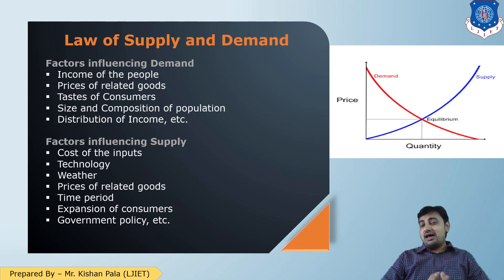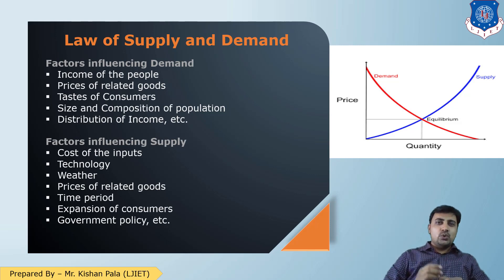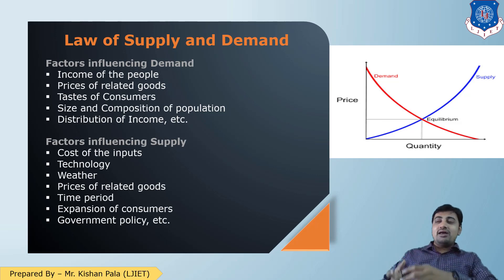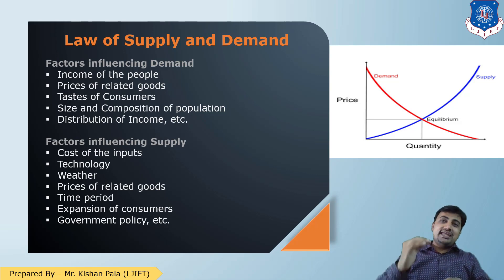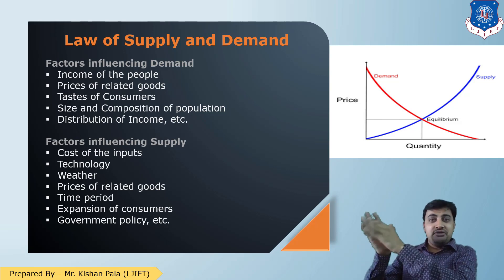There are many factors affecting supply and many factors affecting demand. The first factor for demand is income of people. In school or childhood there is a limitation of pocket money, but when earning in a corporate job, income is higher and requirements are higher. So income is directly reflected in demand — if you earn more, your demand will be more; if a person earns less, his demand may be less.